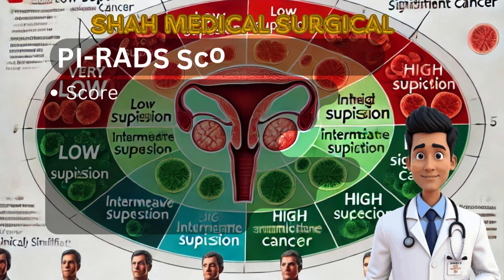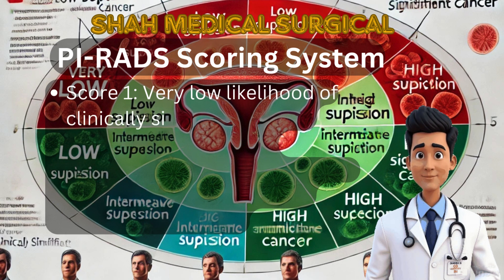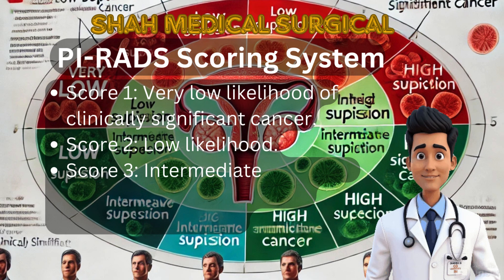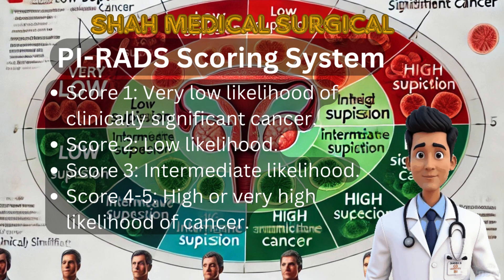The PIRADS scoring system evaluates the likelihood of clinically significant cancer. Score 1 means very low likelihood, score 2 indicates low likelihood, score 3 suggests intermediate likelihood, while scores 4 and 5 represent high and very high likelihood respectively. This scoring guides clinicians in determining the next steps for patient care.